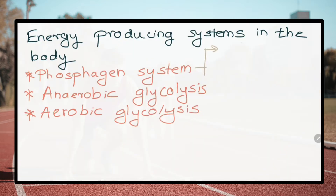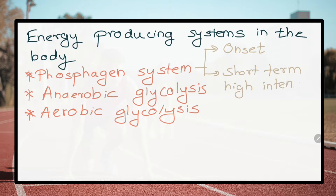When does the body use the phosphogen system? At the onset of activity and during short-term high intensity activities such as throwing a ball and weight lifting.